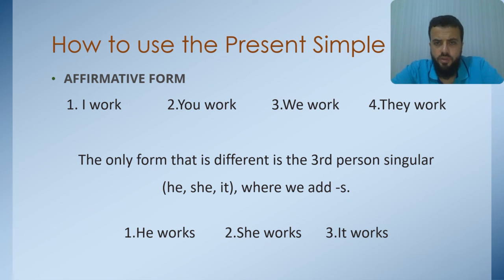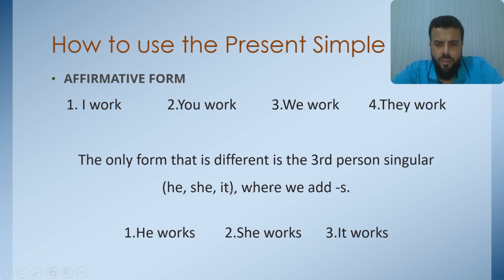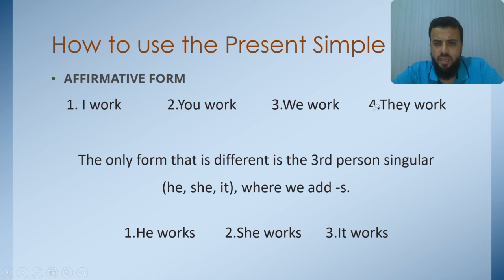So, how to use the present simple. We have the affirmative form — positive. You can notice that we use only the subject and the verb. The only form that is different is the third person singular: he, she, or it, where we add -s to the verb. So when I have he, we say works; she works; it works. Look at the subject — if it's I, you, we, they, we use the verb directly. If it's he, she, or it, we add -s to the verb.